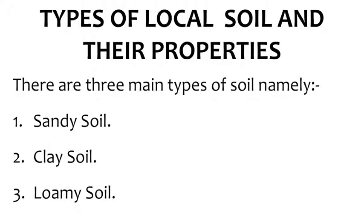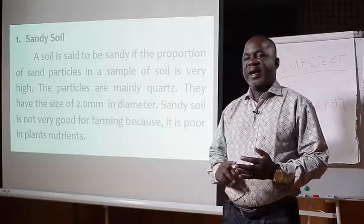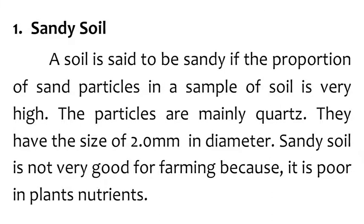We are starting with the types of local soil and their properties. There are three main types of local soils: sandy soil, clay soil, and loamy soil. Sandy soil — a soil is said to be sandy if the proportion of sand particles in a soil sample is very high. The particles are mainly quartz, and they have a size of 0.2 to 2.0 mm in diameter.